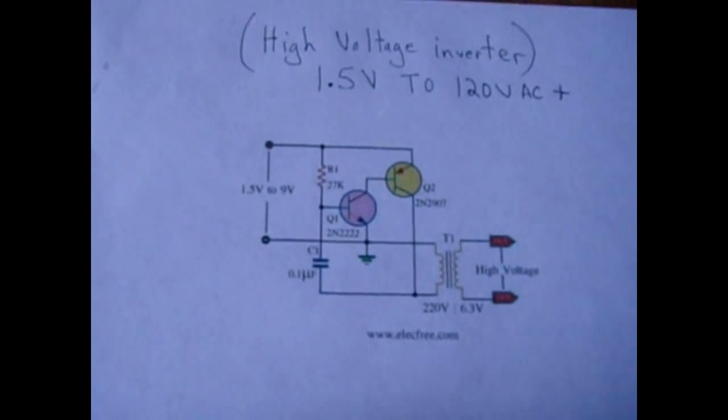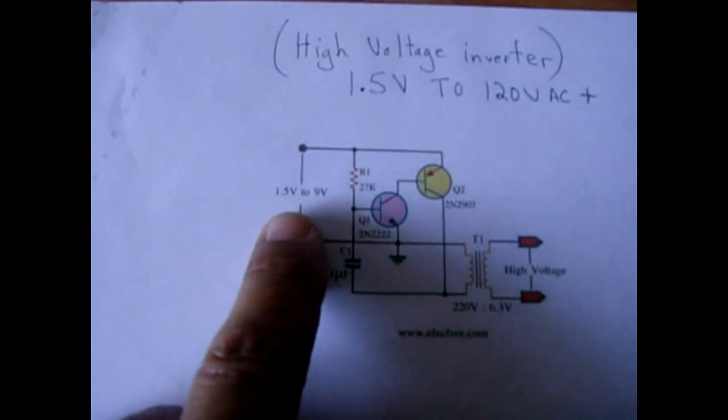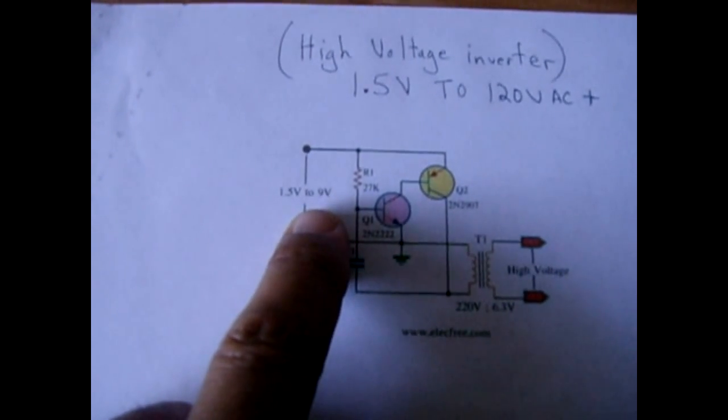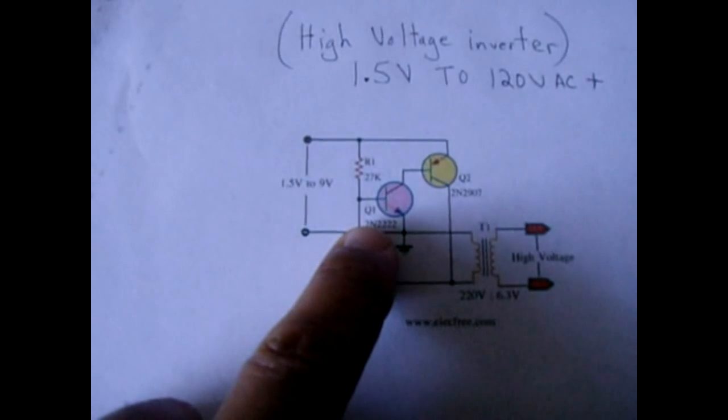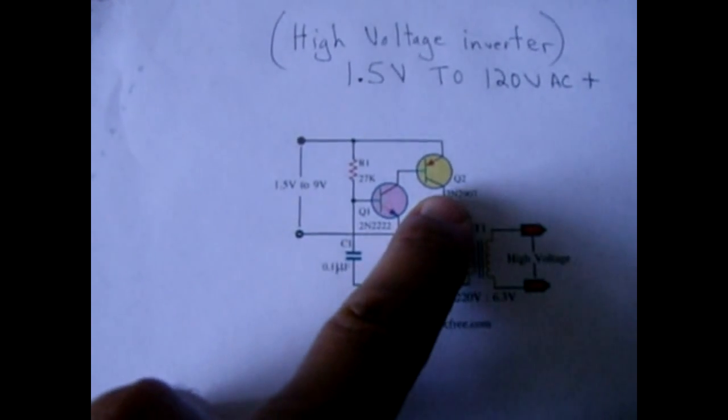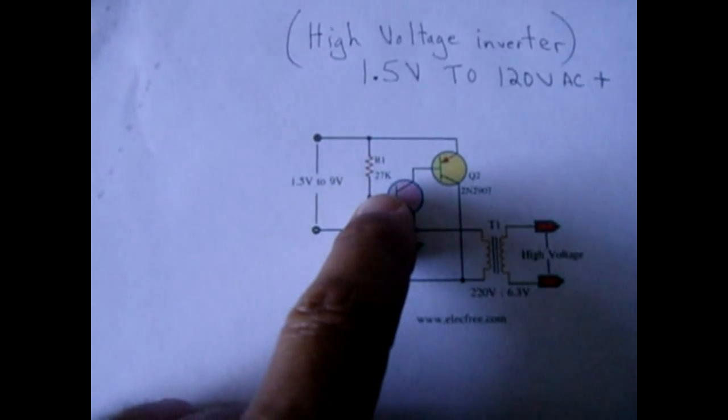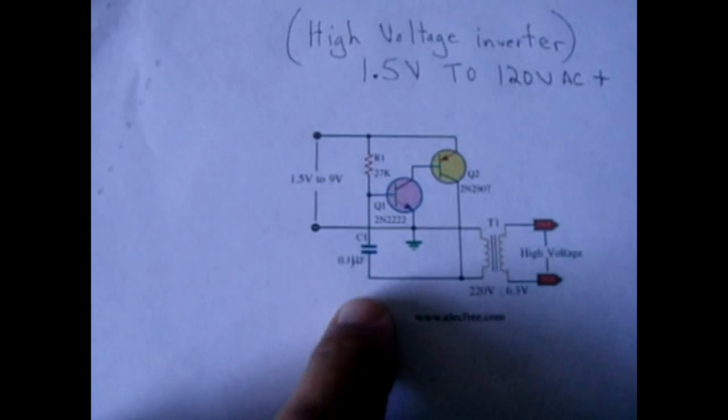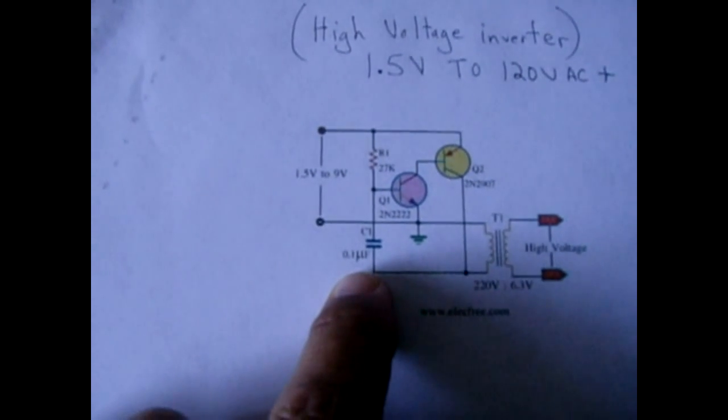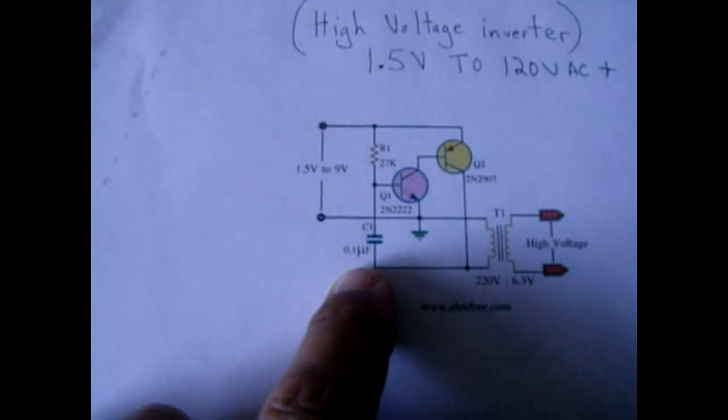Now the schematic is very simple. You have your 1.5 volt battery input up to 9 volts, you have two transistors one is an NPN and the other is a PNP, you have a resistor R1 which is a 27K. I went down to an 18K and the 0.1 microfarad I adjusted down to a 102 cap or a 0.001 microfarad.